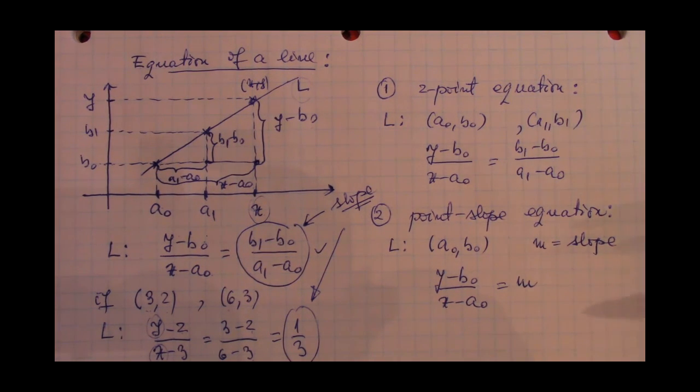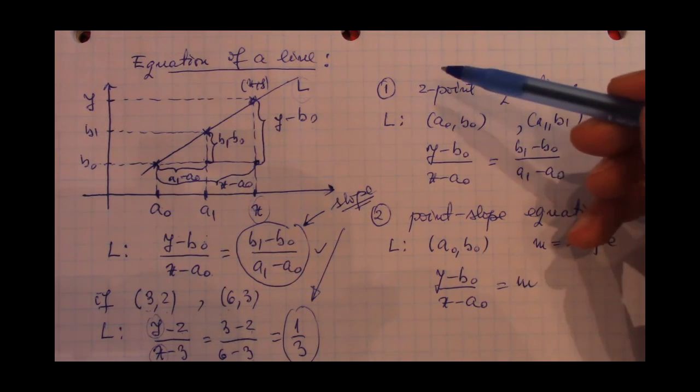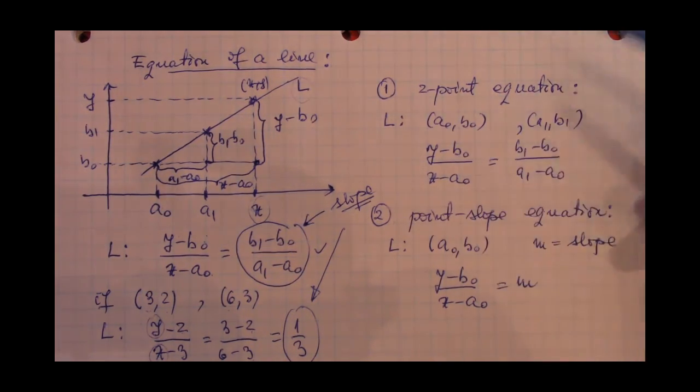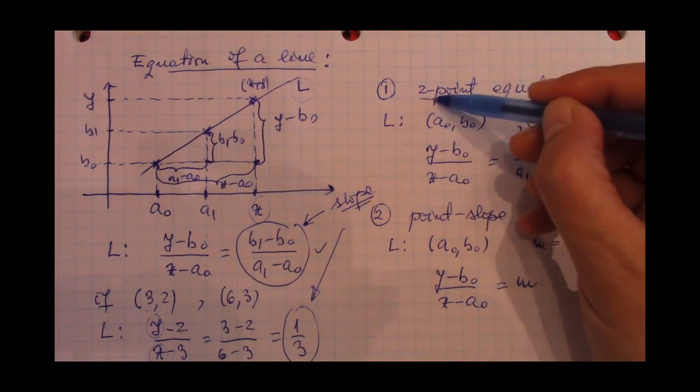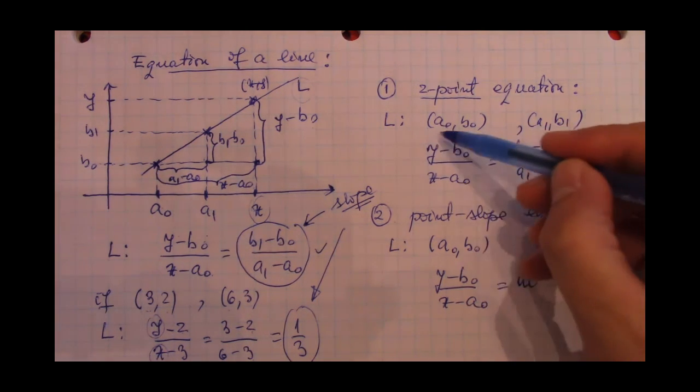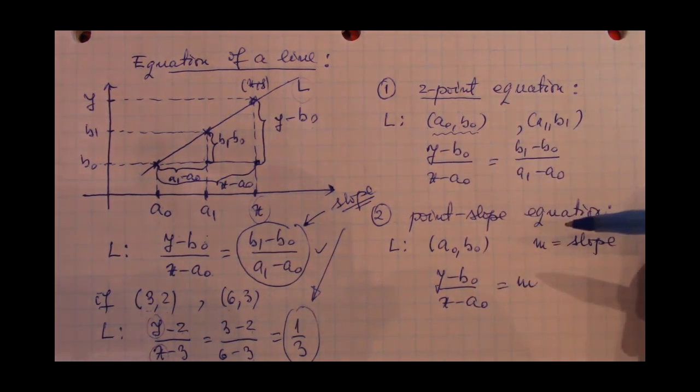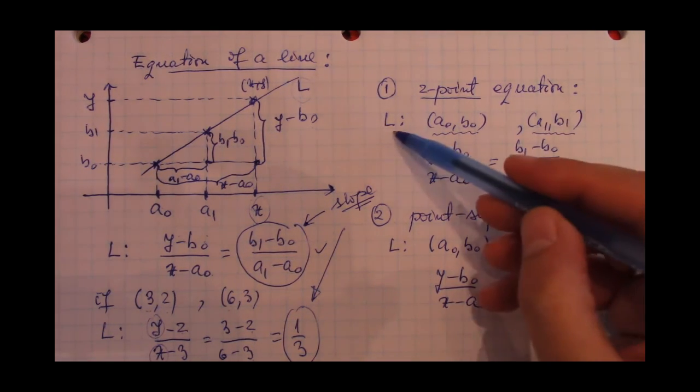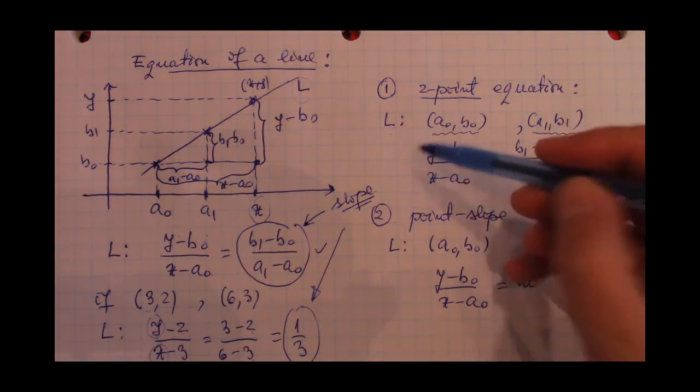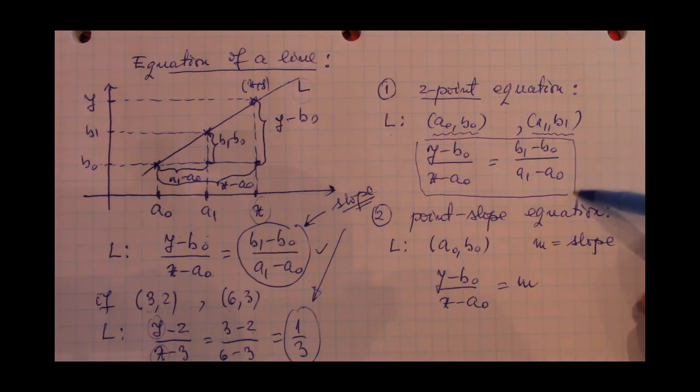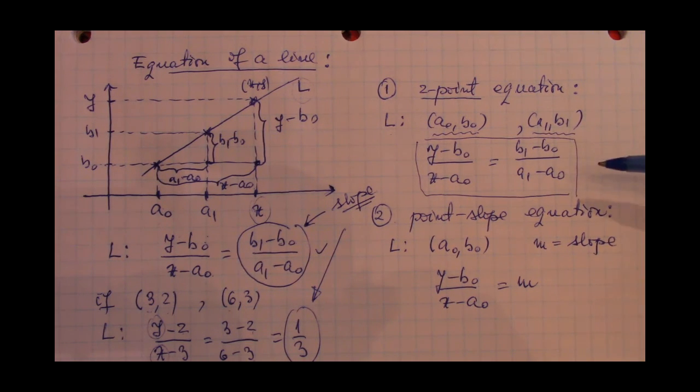All right. So, so far, what we did is we came up with two types of equation of a line. One that we can refer to as the two-point equation. And this says that if we've got two points, one of coordinates a0, b0, and another one of coordinates a1, b1, the equation of the line that goes through these two points has this particular shape.